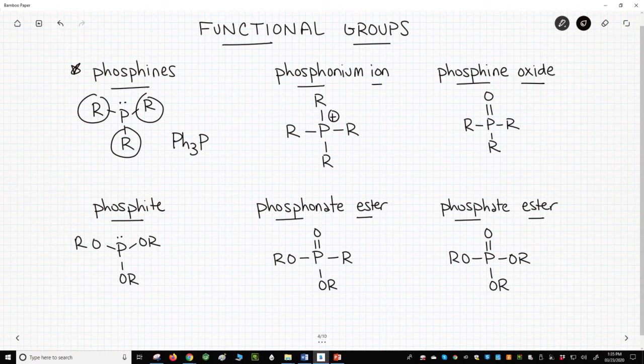If phosphorus somehow has four R groups, which may or may not all be the same, it will have a positive charge and is called a phosphonium ion.